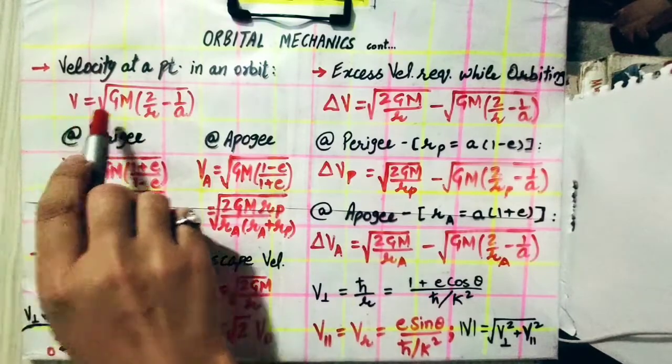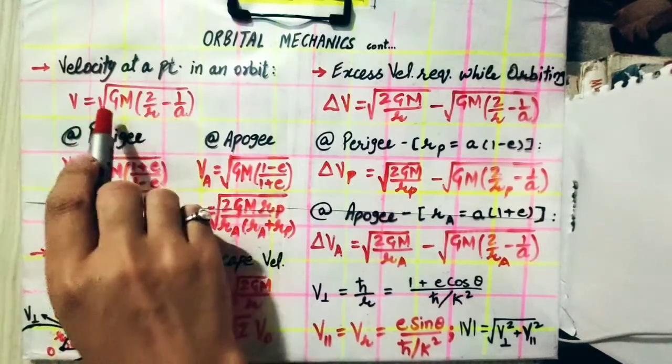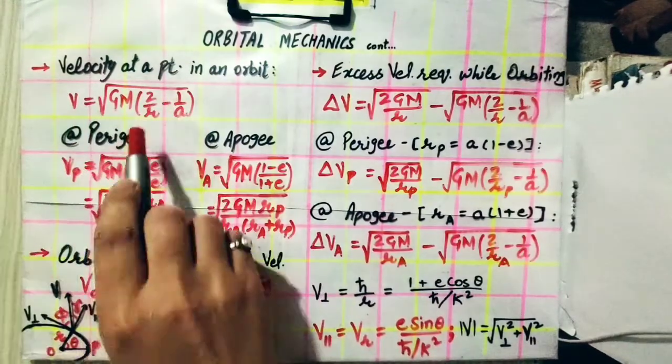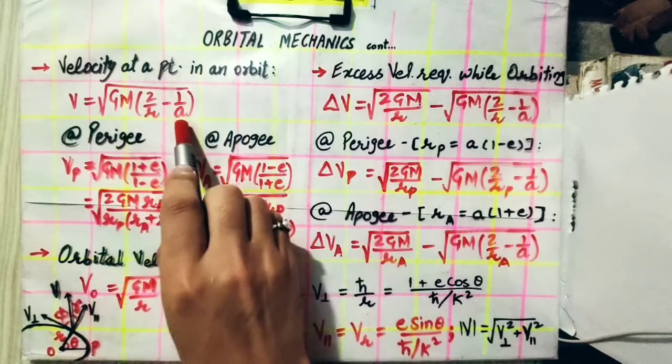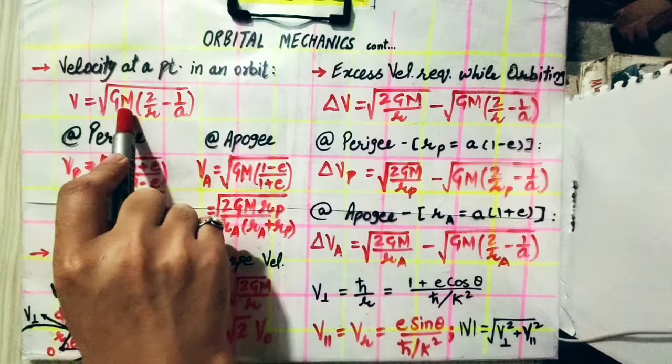Velocity at a point in an orbit is given by V equals under root GM multiplied by 2 by R minus 1 by A. R is the distance from one of the foci to the point in an orbit, and A is the semi-major axis. G is the universal gravitational constant, M is the mass of the planet.